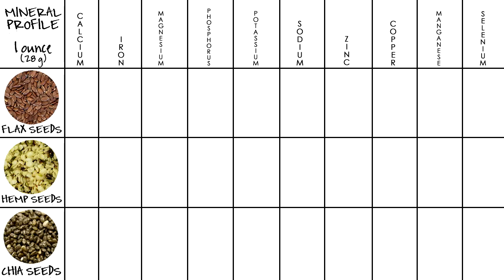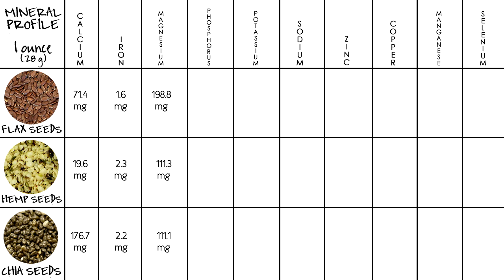So let's dive into our mineral profile. For calcium: flax seeds 71.4 mg, hemp seeds 19.6 mg, and chia seeds 176.7 mg. For iron: flax seeds 1.6 mg, hemp seeds 2.3 mg, chia seeds 2.2 mg. For magnesium: flax seeds 198.8 mg, hemp seeds 111.3 mg, and chia seeds 111.1 mg.